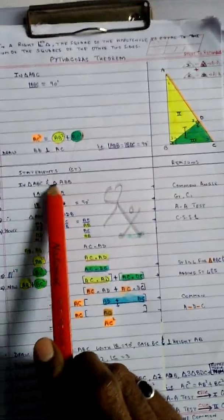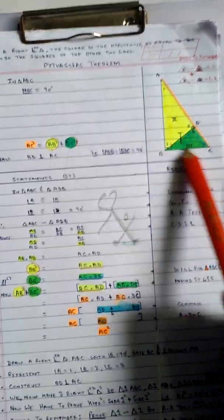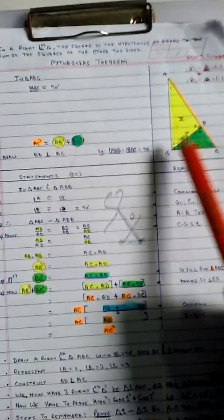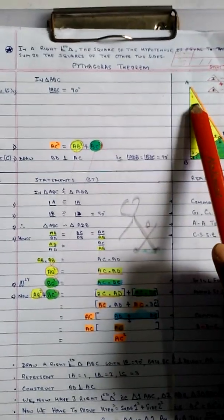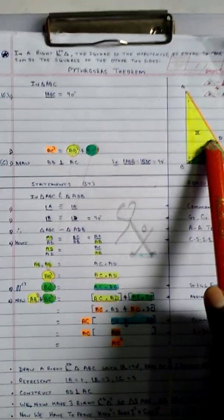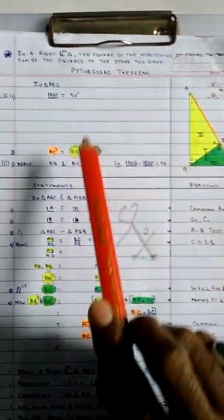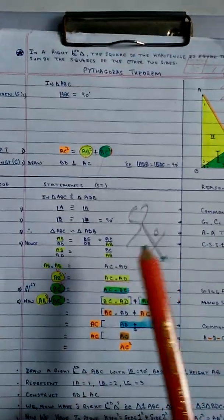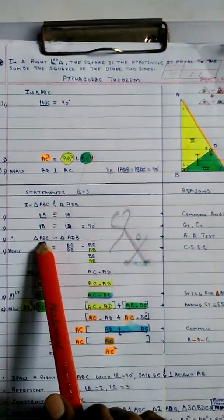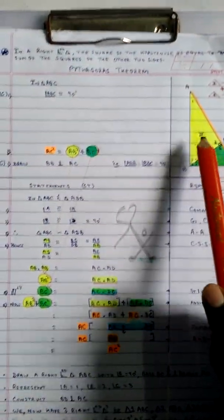In triangle ABC and triangle ADB, that is triangle 1 and triangle 2, angle A is common. Angle B and angle D equal 90 degrees by the given and construction. Therefore, triangle ABC is similar to triangle ADB.